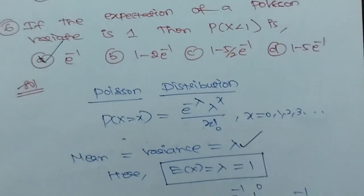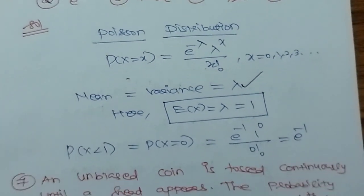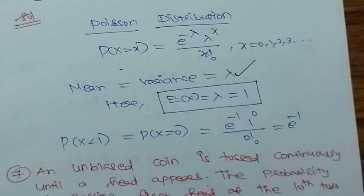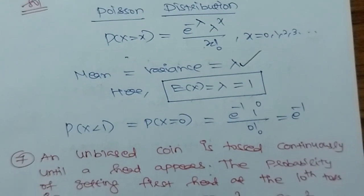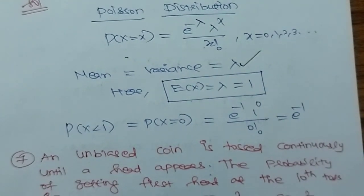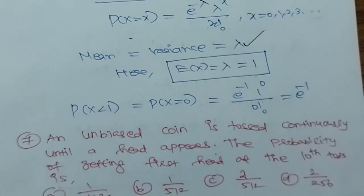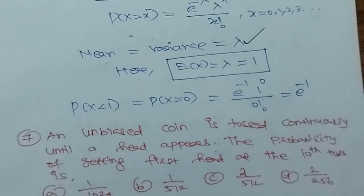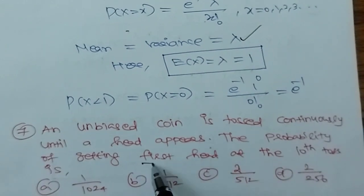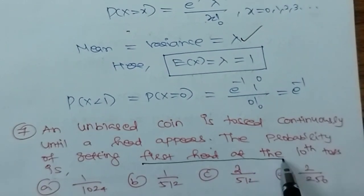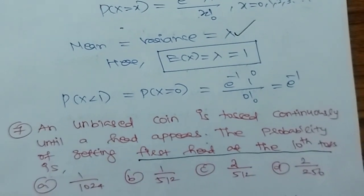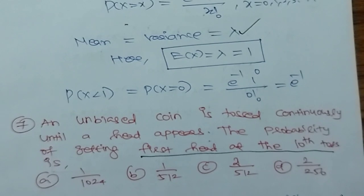An unbiased coin is tossed continuously until a head appears. The probability of getting the first head at the tenth toss. Option A: 1/2^10.